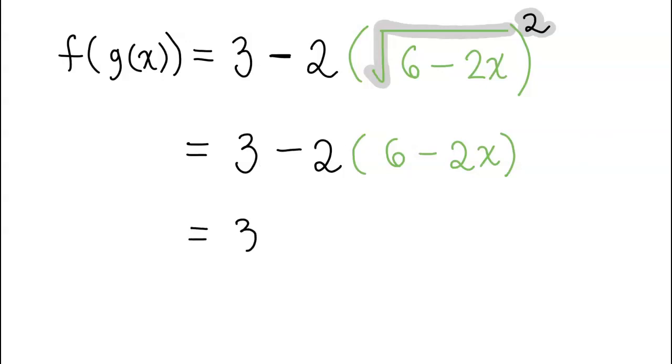So the 3 stays right there, but when you distribute negative 2 in, you'll get negative 2 times 6, which is negative 12, and negative 2 times negative 2x, that turns out to be positive 4x.